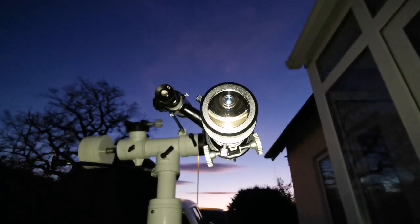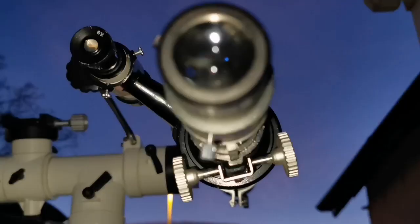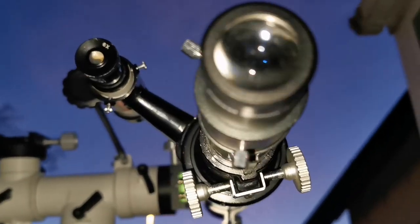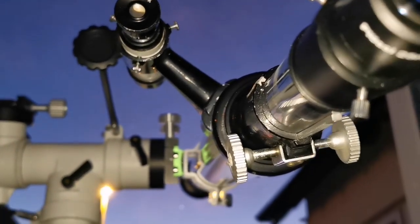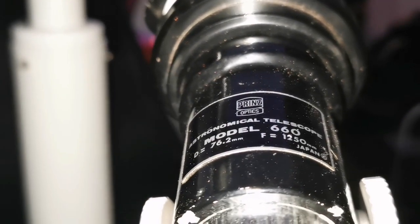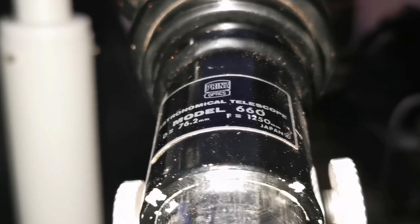So now I'm using a Prince Optic 76.2mm telescope. It has a focal length of 1250mm, it's a very long telescope, and as you can see here, it gives you an F number around F 16.4. Let's see how is the view.